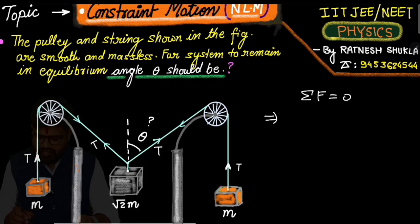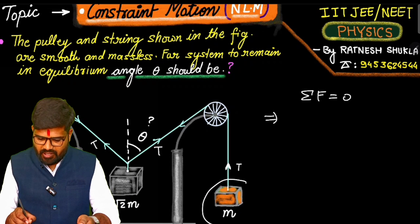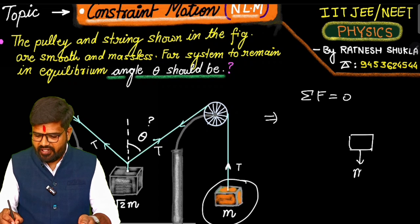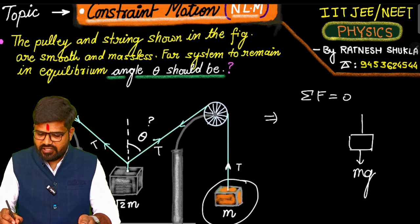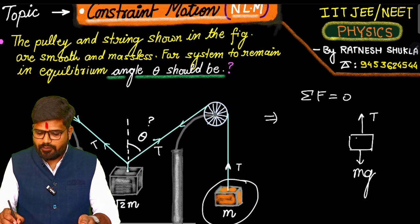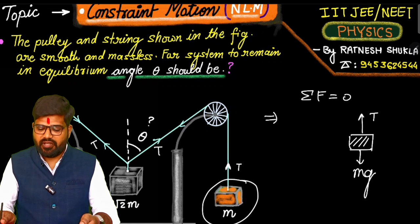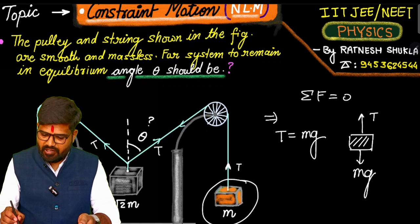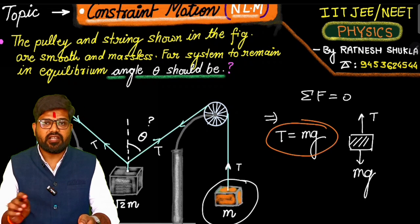Now please see here. If we talk about this first block m, see its free body diagram. Below, its weight is acting mg and since it's connected by string, tension T acts on it. Since the block is at rest position, we can say that tension balances the weight mg. So indirectly we get tension value T equals mg.